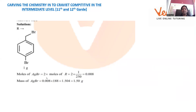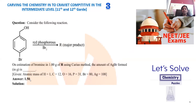After the calculation, the number of moles of silver bromide is 0.008. Mass equals number of moles multiplied by the molecular weight of silver bromide, which is 188. So 0.008 × 188 gives 1.5 grams. 1.5 grams is the right answer for question number three. This is the kind of estimation called gravimetry.